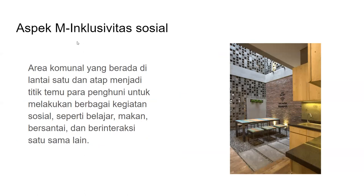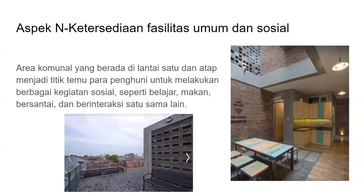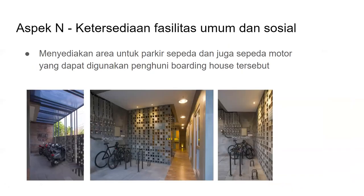Untuk aspek L, yaitu estetika dan pelestarian nilai-nilai budaya: sudah bisa terlihat dari interior maupun eksteriornya — dengan anggaran yang murah, tidak berarti harus mengorbankan estetika dan performa. Pembatas antara tempat parkir sepeda indoor menggunakan material kombinasi logam dan beton bertulang. Dengan penggunaan berbagai bahan ekspos dan bermain tekstur, rumah kos ini mampu menonjol dari tetangganya. Terlihat style industrial karena menggunakan material terekspos seperti batu bata dan ada roster. Untuk aspek M, inklusivitas sosial: area komunal yang berada di lantai 1 dan atap menjadi titik temu para penghuni untuk melakukan berbagai kegiatan sosial seperti belajar, makan, bersantai, dan interaksi satu sama lain. Juga menyediakan area parkir sepeda dan sepeda motor yang dapat digunakan oleh penghuni boarding house.